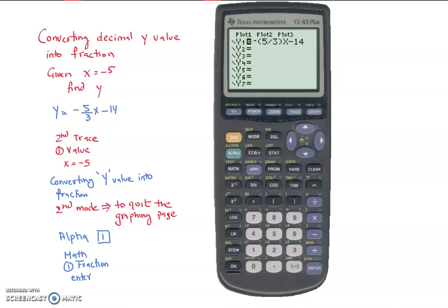So let's say that you're given an x value, like we have over here, as x equals to negative 5, and you try to find the y value. So this is the same as when you're trying to find the y-intercept.